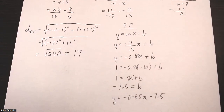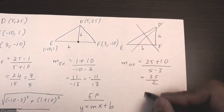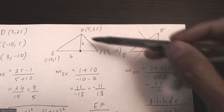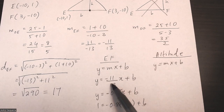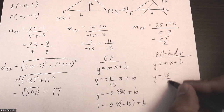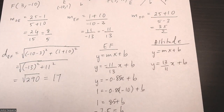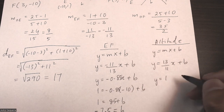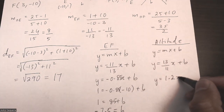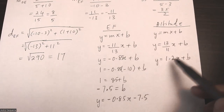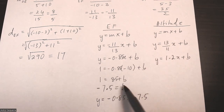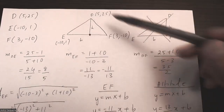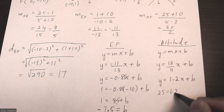For the altitude, I use y equals mx plus b, where the slope is the negative reciprocal of EF's slope. Flipping negative 11/13 gives 13/11, approximately 1.2. Substituting point D to find b, I get b equals 19. So the equation of the altitude is y equals 1.2x plus 19.